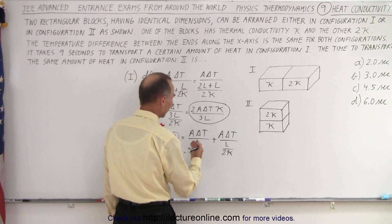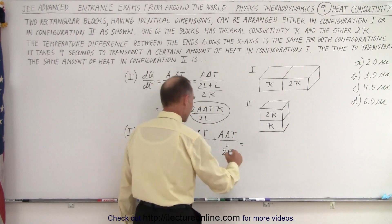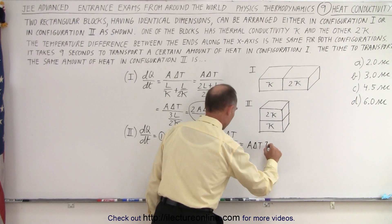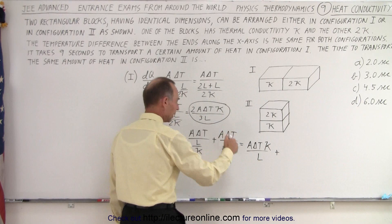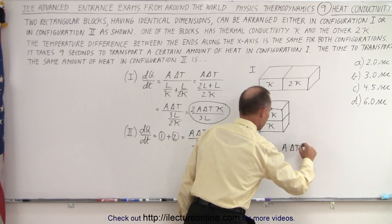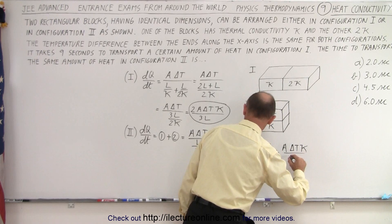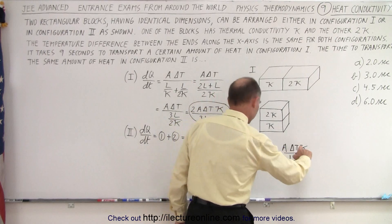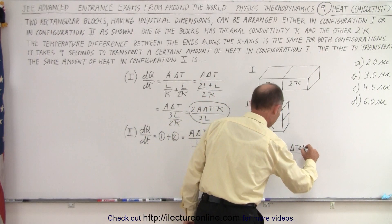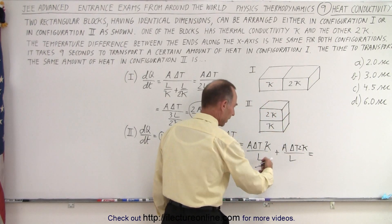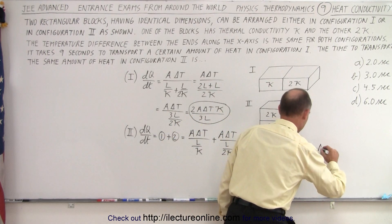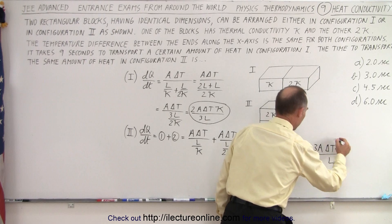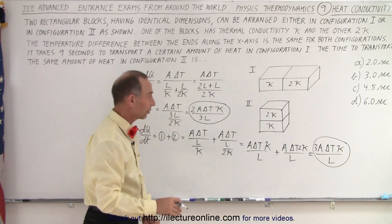We can rewrite this by bringing K up: A·delta T·K over L, plus bringing 2K up, we get 2A·delta T·K over L. Now they share the same denominator, so we add the numerators and end up with 3A·delta T·K over L. That is the rate of heat flow through configuration 2.